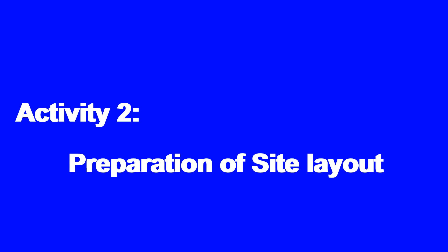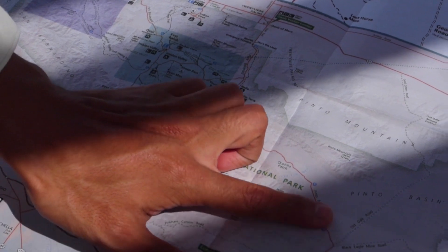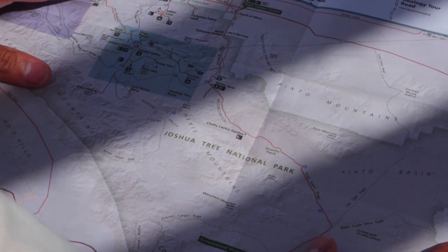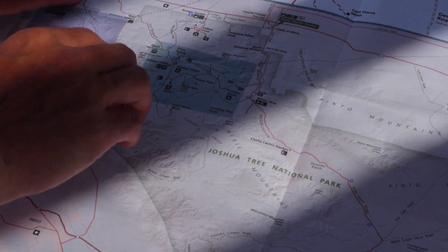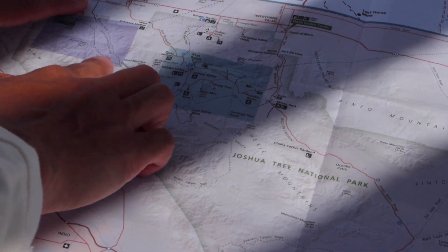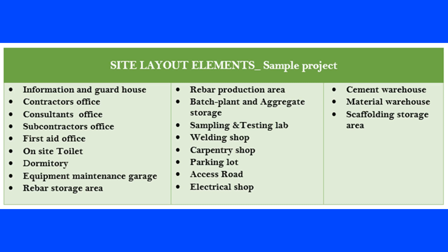Activity number two: preparation of site layout. Once you define the site boundaries, you can prepare a site layout or site organization plan. The layout of a construction site includes locating, sizing, and positioning of temporary facilities — from small facilities to warehouses, fabrication shops, repair shops, storage areas, batching plants, and so on.